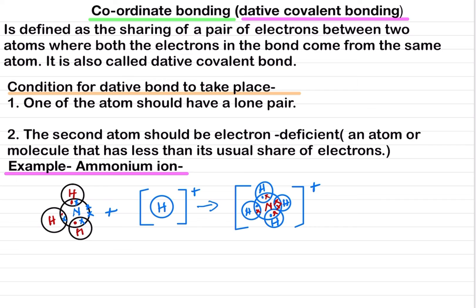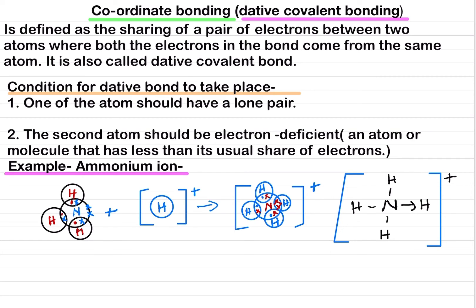This is the structure of the ammonium ion. In the clear structure, nitrogen is in the center with four hydrogen atoms. The coordinate or dative bond is shown with an arrow pointing away from the lone pair toward the hydrogen. Whenever we show a coordinate bond, we use an arrow pointing away from the lone pair. This is the ammonium ion formed by dative covalent bonding.